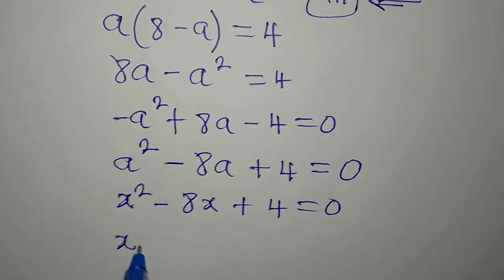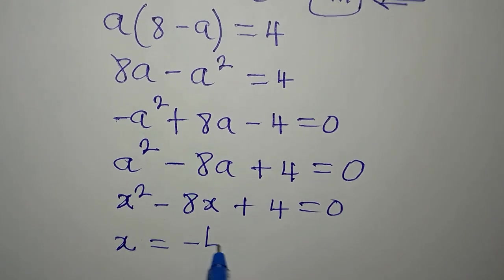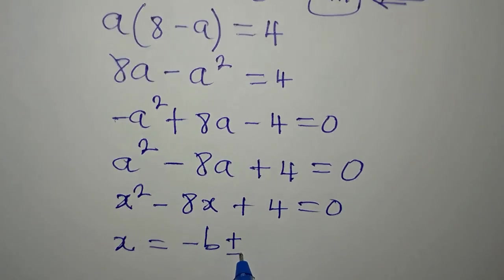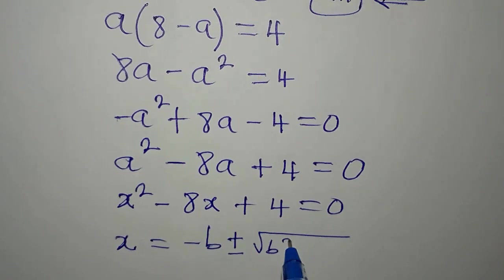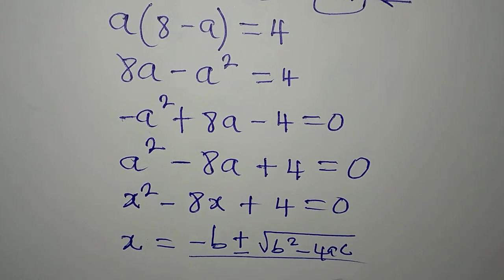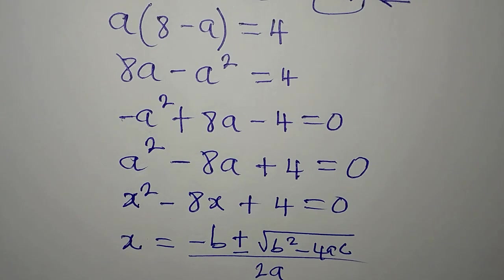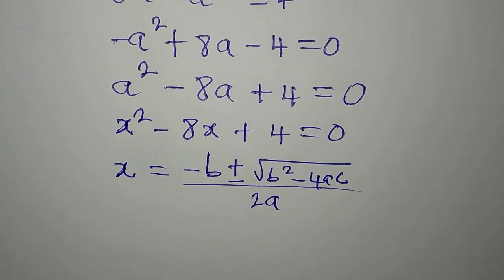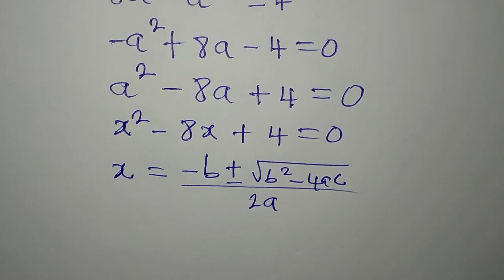Now, what is the formula? X is equal to minus B plus or minus square root of B squared minus 4AC, and everything divided by 2A. Now, what is our A? You need to take note of that.